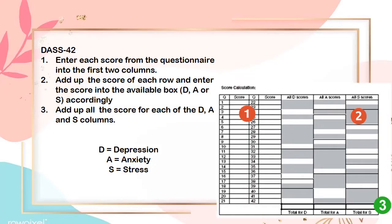For the DASS-42, the scoring steps are as follows. First, enter each score from the questionnaire into the first two columns. Second, add up the score of each row and enter the score into the available box labeled D, A, or S accordingly. Third, add up all the scores for each of the D, A, and S columns.